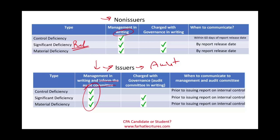Now we understand what a control deficiency is, what constitutes a significant deficiency, what factors we use, and what constitutes a material weakness and who we report it to. Next, we'll look at actual reports for issuers and non-issuers. The internal report summarizes the whole integrated audit process. There will be two separate recordings, one for issuers and one for non-issuers. Go to Farhat Lectures, work through multiple choice questions, and prepare for the CPA exam — this is an important topic they test you on. Good luck and study hard.